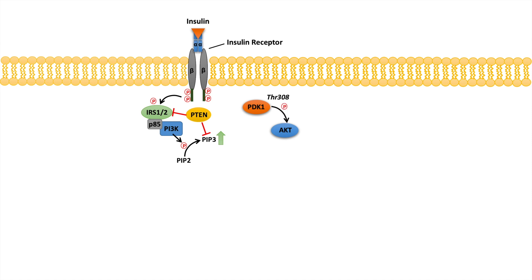PDK1 will actually phosphorylate AKT. The phosphorylation by PDK1 on AKT is at the site of threonine 308. This is very important to remember: PDK1 phosphorylates AKT at threonine 308.